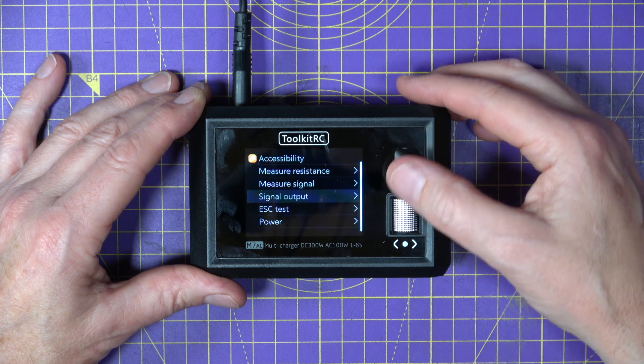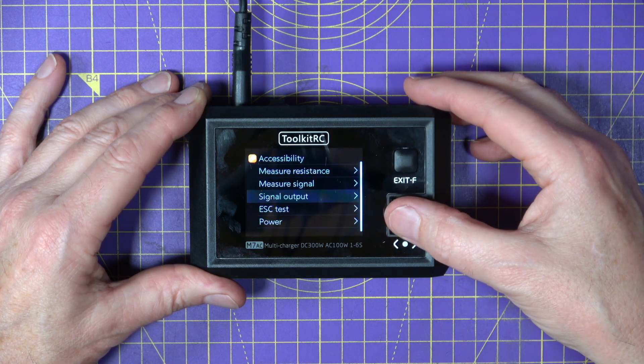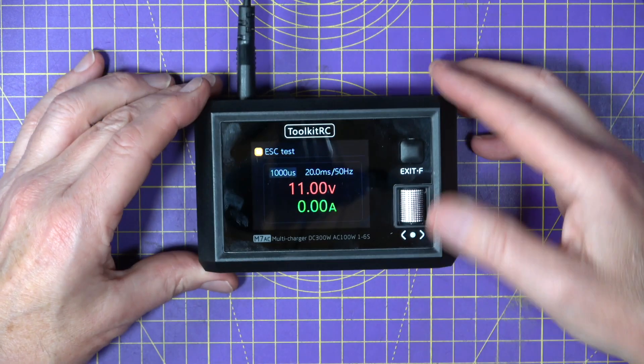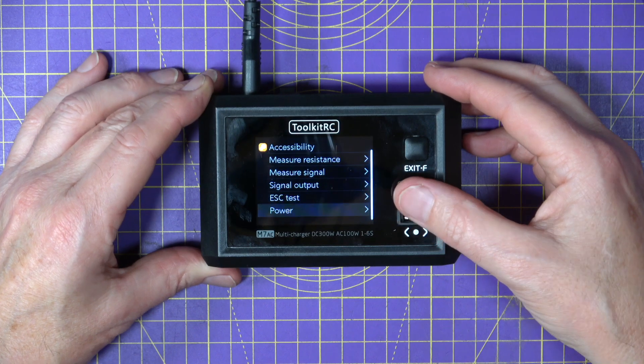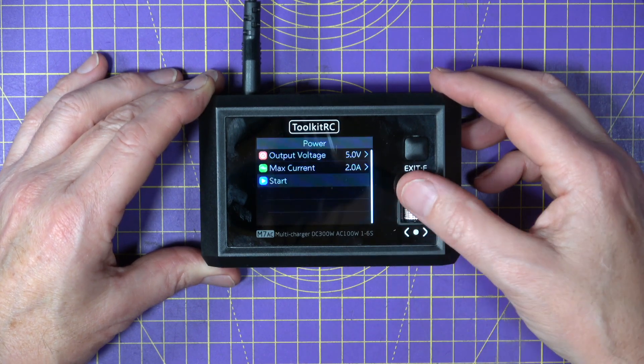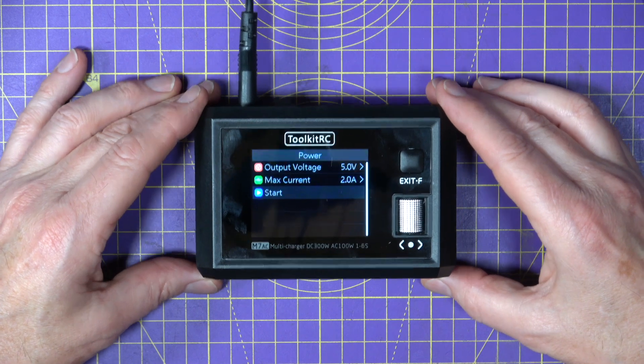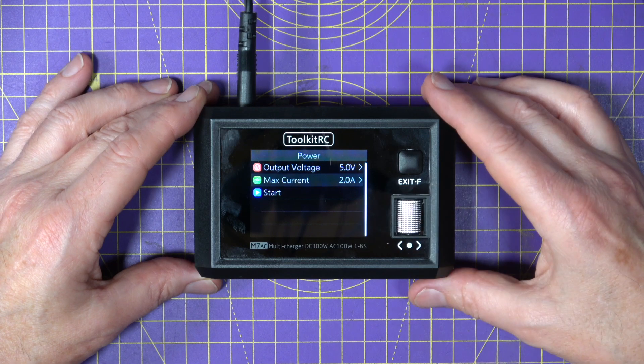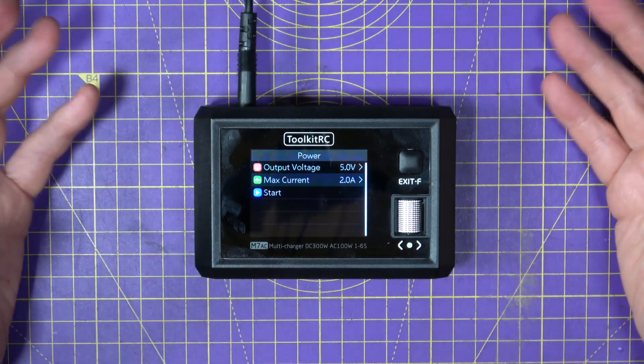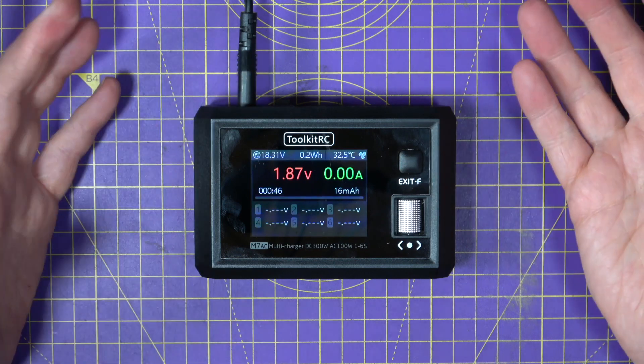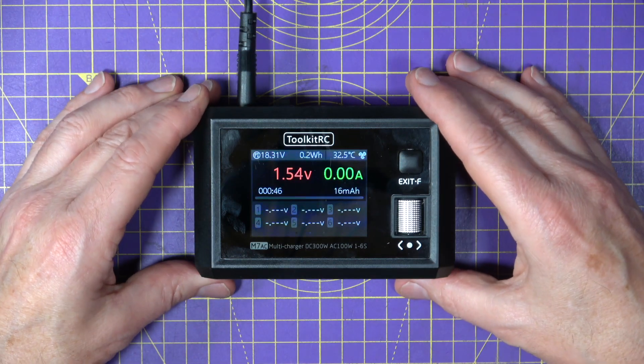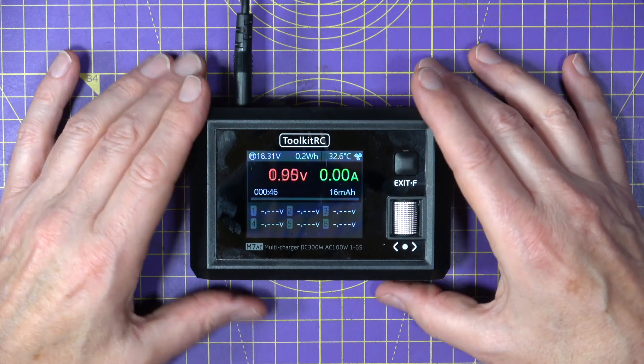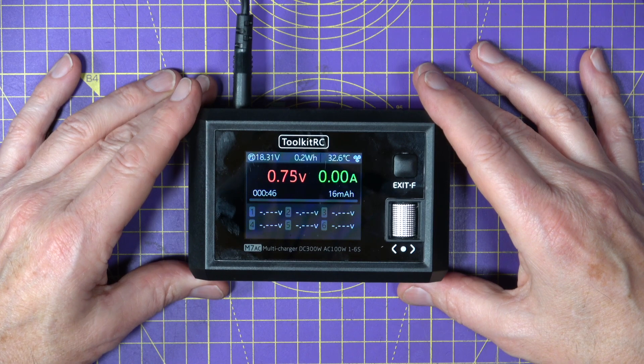You're not going to use it very often but when you need it it's very useful. So we escape out of there, we go down here, you've also got the ability to plug your ESCs into here to test those, again very useful. Here is the power button, now what that means is that you can use this as a DC bench power supply, you can set the output voltage, the output current. Again useful if you don't already have a DC variable bench power supply, incredibly useful piece of kit. Like I say you're not going to use it that often but when you need it it's going to save your bacon.